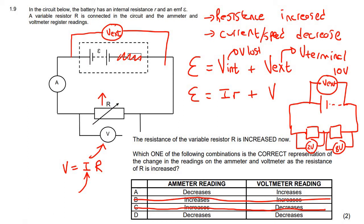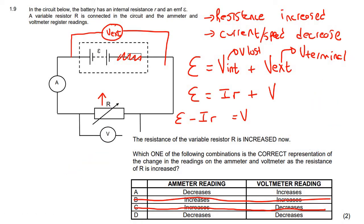So we know that EMF is a constant value. So what I want to do is I want to get this by itself quickly. So I want to go V equals EMF minus IR. Now, I know that EMF is a constant. I know that the internal resistor is also a constant. So this is nice.